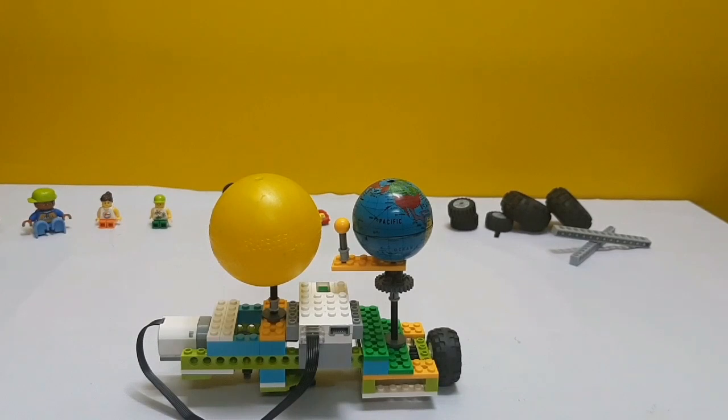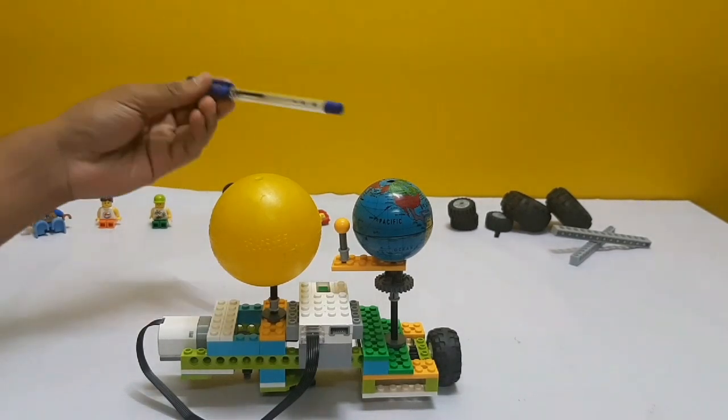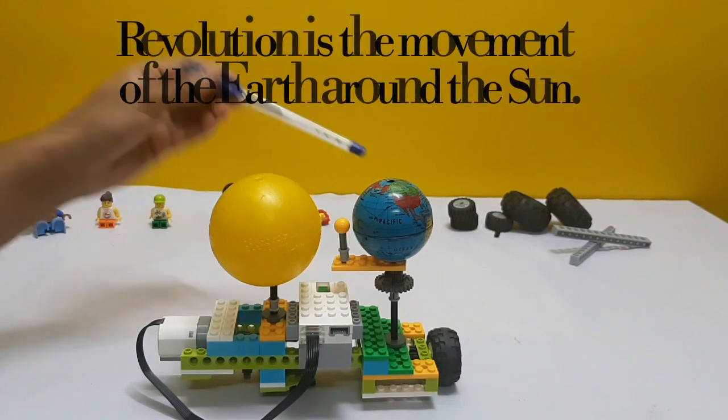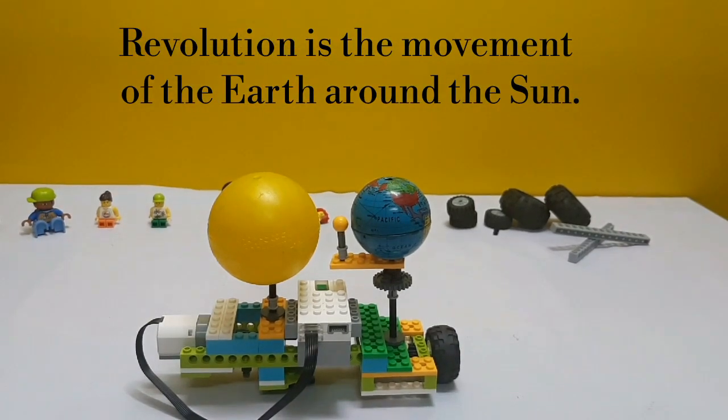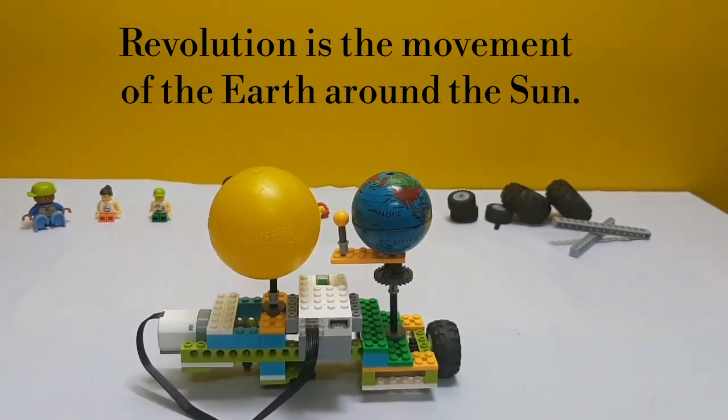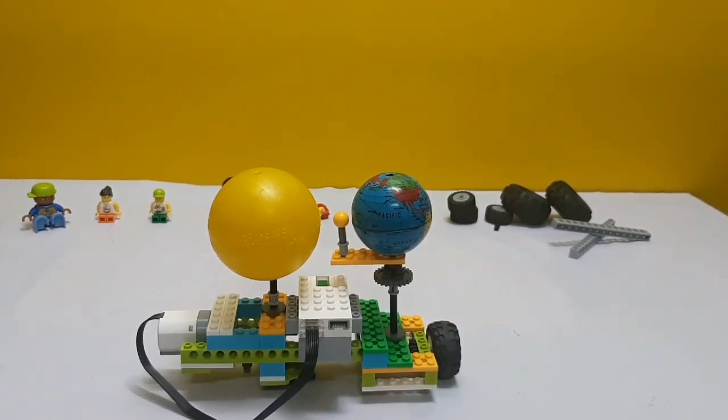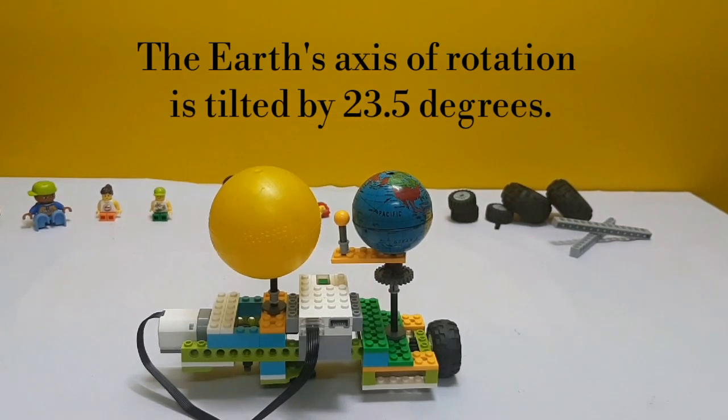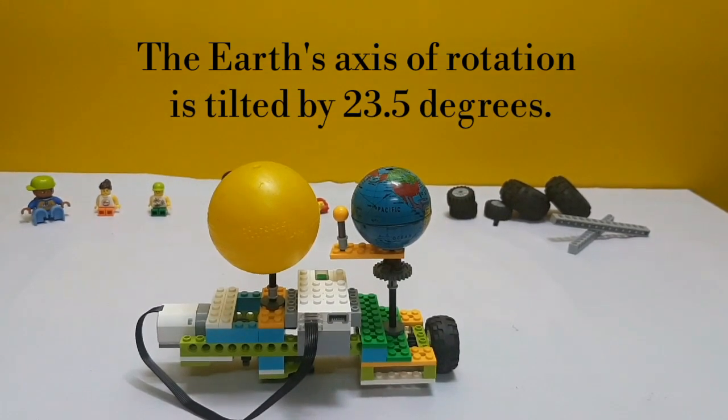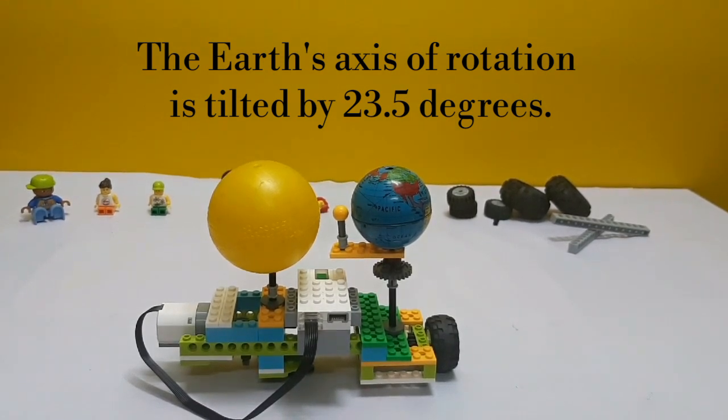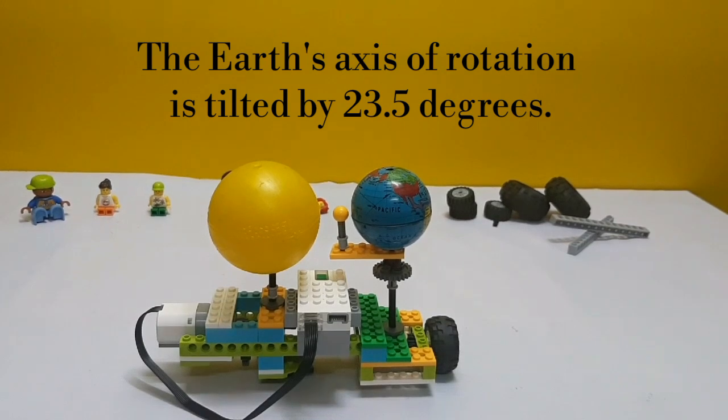And all the eight planets revolve around the sun. Earth is also one of the planets which revolves around the sun. It revolves in an elliptical orbit and rotates on its own axis. The axis is tilted at 23.5 degrees and these two phenomena, rotation and revolution, are responsible for the phenomena that